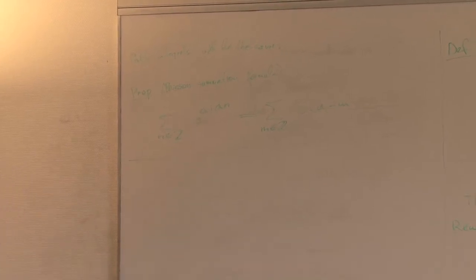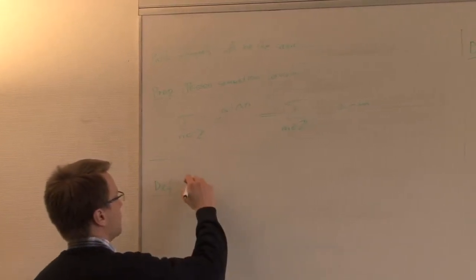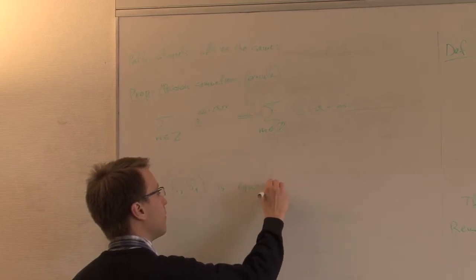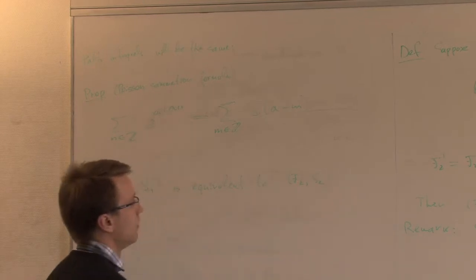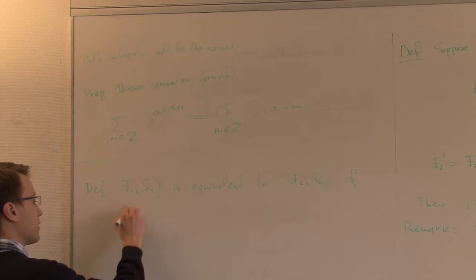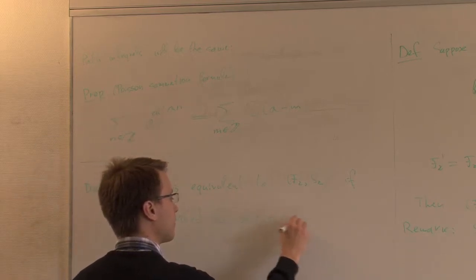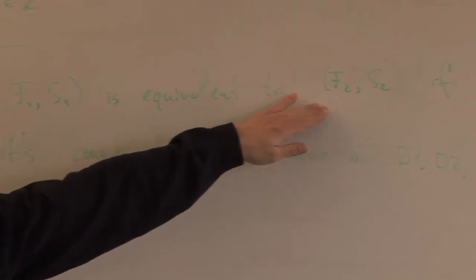So now you have these three transformations. The final definition of equivalence between two field theories is: the theory defined by F1, S1 is equivalent to the theory defined by F2, S2 if it's connected by a sequence of transformations D1, D2, and D3. D1, D2, and D3 generate an equivalence relation on the space of all field theories.